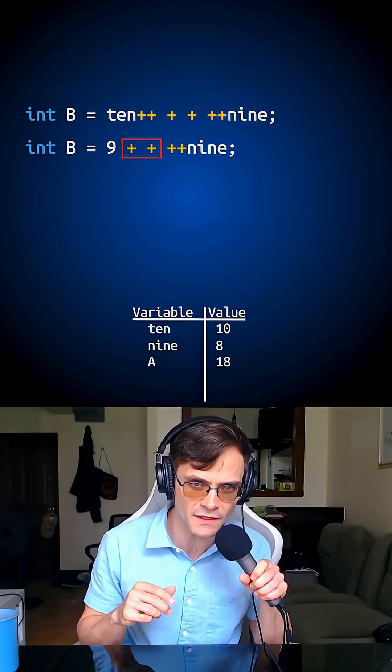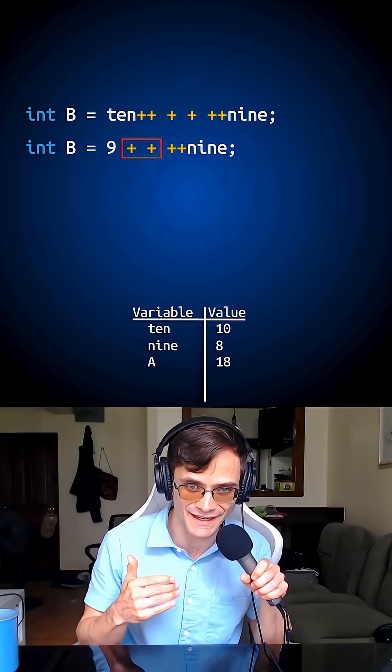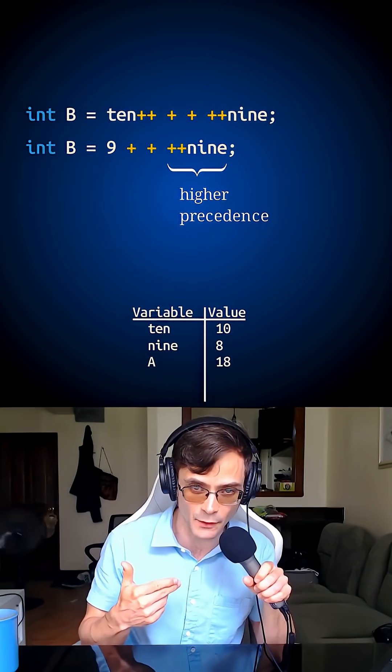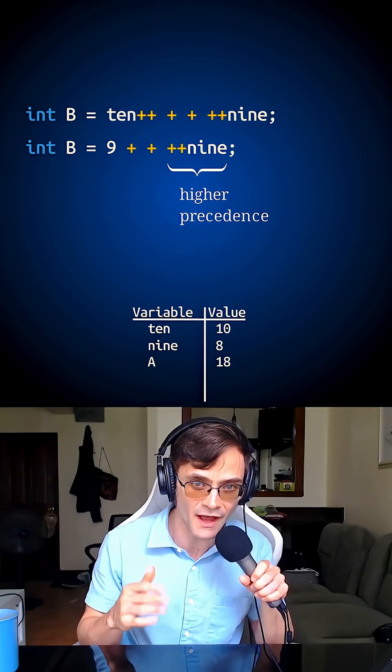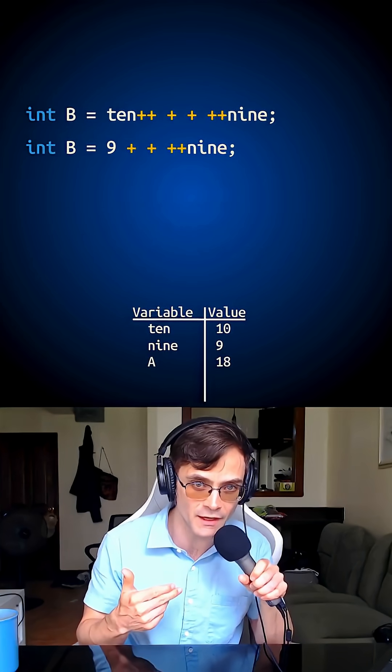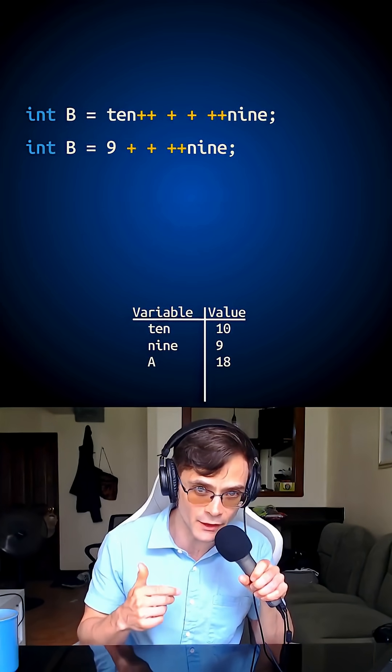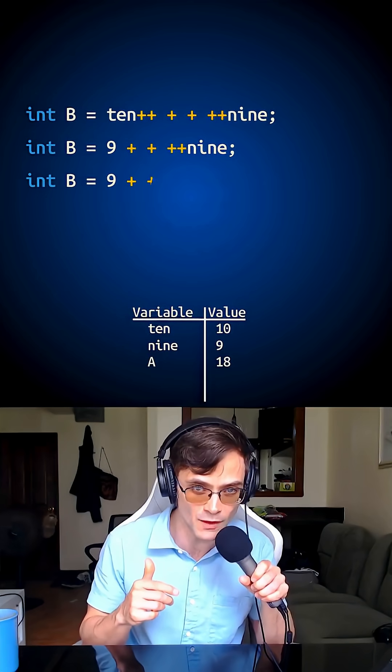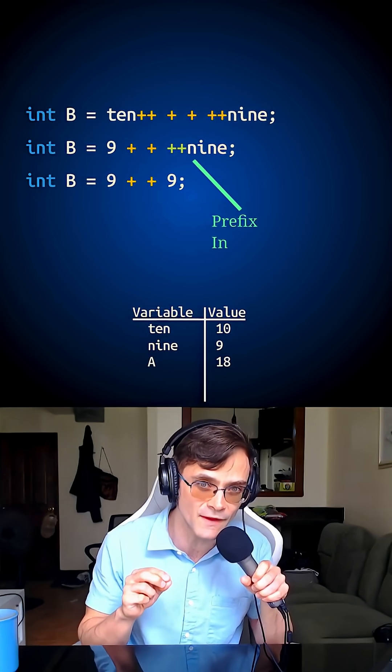Then I do plus the positive of plus plus 9. So plus plus 9 gets processed first. I take the variable 9, I add 1 to it, bringing it back to the value 9. And I use the value 9 in this line to do the math, because that is prefix increment.